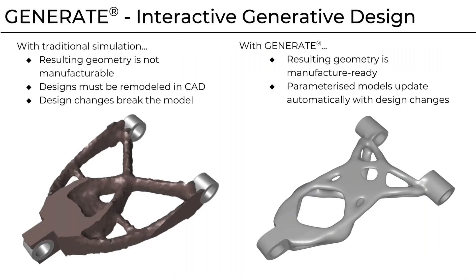One quick thing to point out: if you've seen traditional topology optimization or simulation packages, one downside is that the resulting geometry is more inspirational than manufacturable. The designs have to be remodeled in CAD. That maroonish data on the left is not NURBS data, not B-REP — it's essentially chunky facets. It's not suitable for manufacturing, machining, or 3D printing. So what Generate strives to do is output manufacturer-ready geometry. As you dynamically update things, the result — even if you pause at any time — will be something you can actually manufacture, without sharp edges or undercuts where you don't want them. You can define extrusion directions and build directions for additive manufacturing.